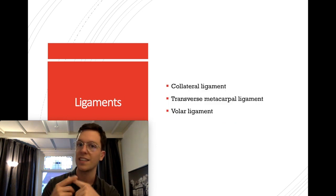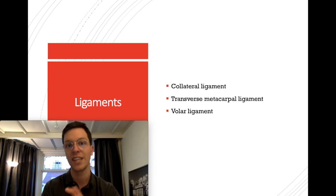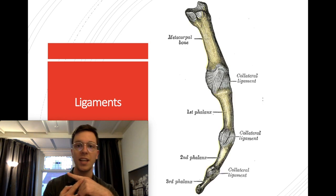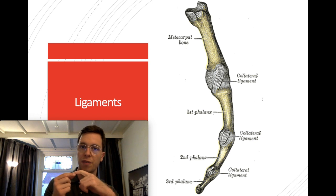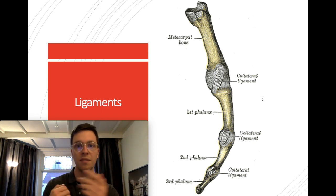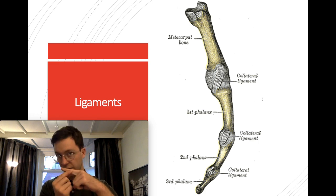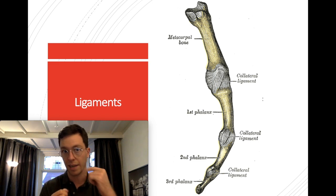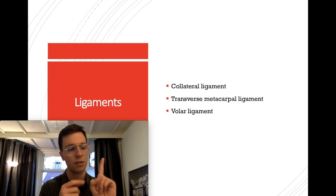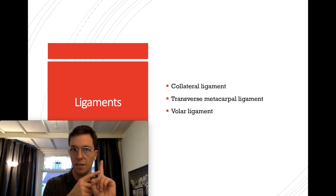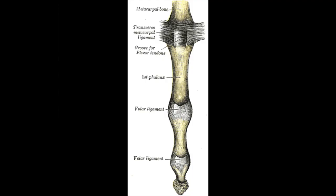The ligaments that hold your phalanges in place are simpler. First of all you have collateral ligaments in the joints of your fingers — you have a proximal and a distal interphalangeal joint, and those are stabilized by collateral ligaments. You also have a volar ligament or volar plate, which is on the flexor side of each joint, and you can see that in this picture as well. It prevents the finger from hyperextension and holds it in place. And lastly you also have a transverse metacarpal ligament that gives strength and stability to this joint.